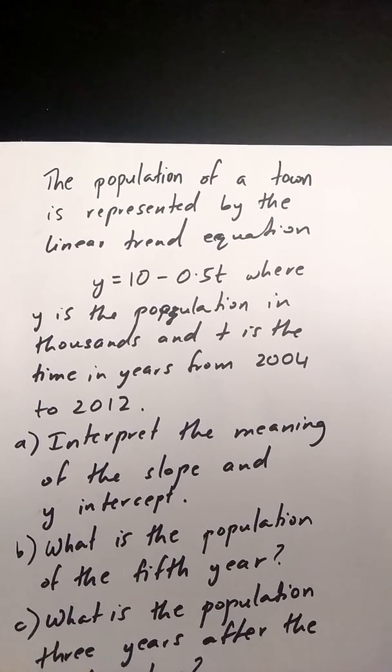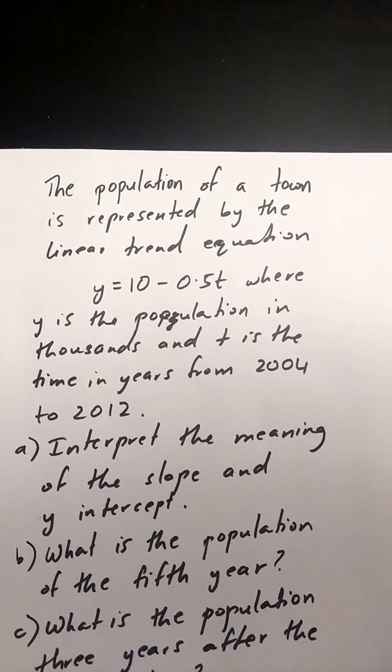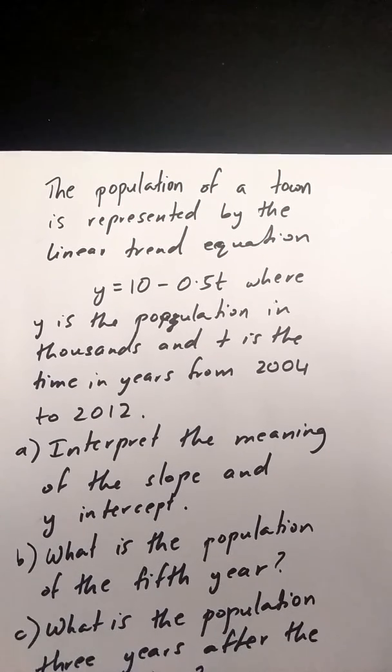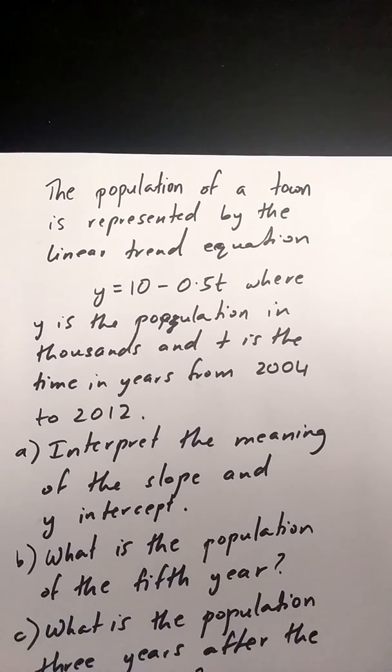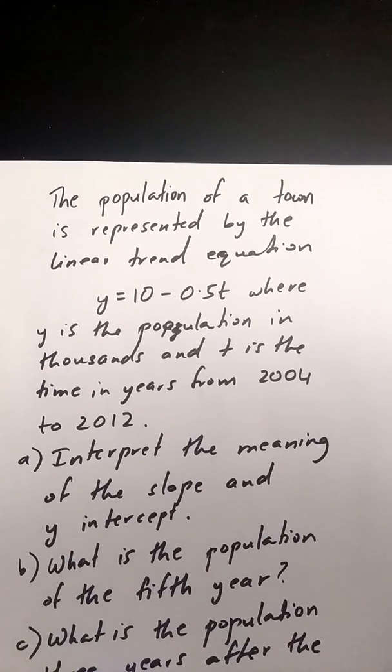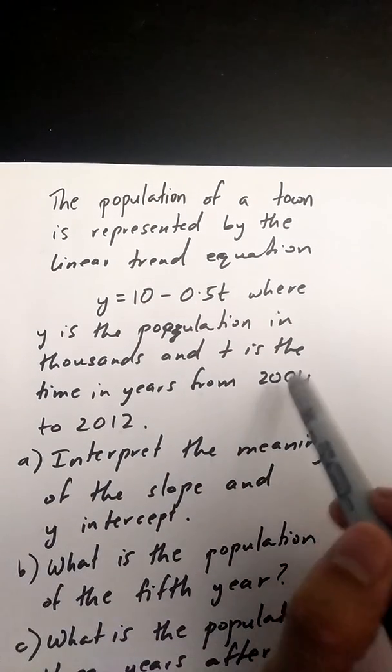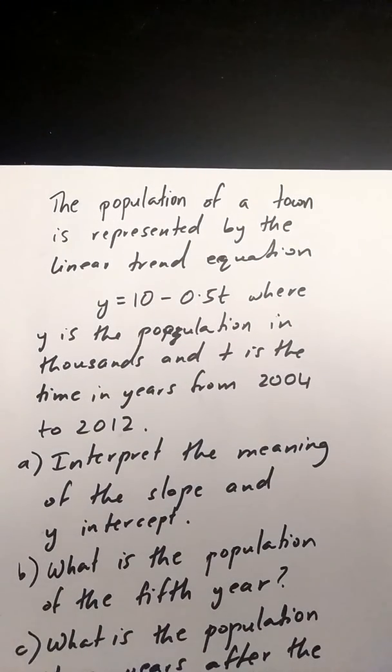Okay, so in this question it says the population of a town is represented by the linear trend equation y equals 10 minus 0.5t, where y is the population in thousands, and t is the time in years from 2004 to 2012. So basically this equation was created using the data from 2004 to 2012.